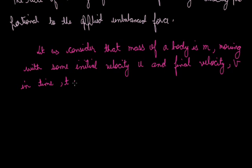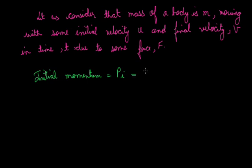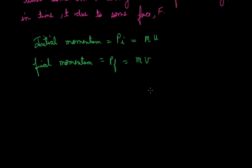Now, if we want to calculate the initial momentum, let it be represented by Pi. We said the mass of the body is M and its initial velocity is U. So the product of these two gives us the initial momentum: Pi = M × U. Next is the final momentum, Pf, which is a product of mass M and its final velocity V. So the product is M × V — that is the final momentum.